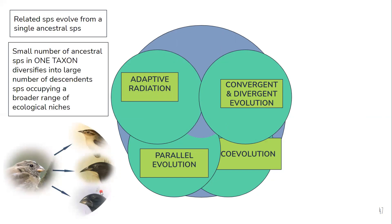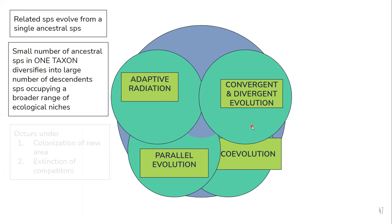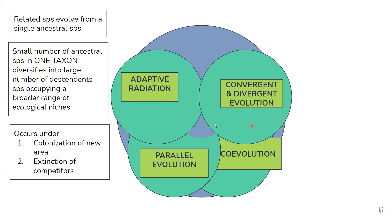These finches evolved into different species from one ancestor and they occupy different niches — this is adaptive radiation. It occurs under two conditions: first, colonization of a new area, such as the Galapagos Islands, where colonization causes a species to occupy different niches; and second, when there is extinction of competitors, so if the competition of a species is removed it undergoes adaptive radiation.